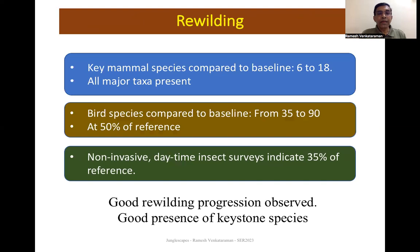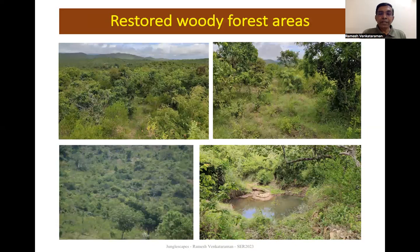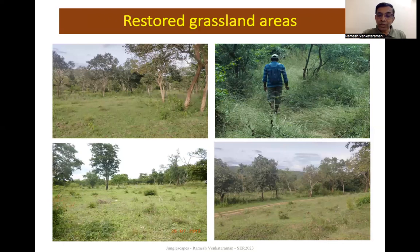Rewilding is an important proxy indicator of restoration progression. Many key mammal species have returned compared to baseline, including keystone species like elephants, tigers, and Indian bison (gaur). Bird species have shown a very large increase, though we are still at 50 percent of reference. Insect surveys indicate around 35 percent of reference. These are pictures of some of the restored woody forest areas and restored grassland sites.